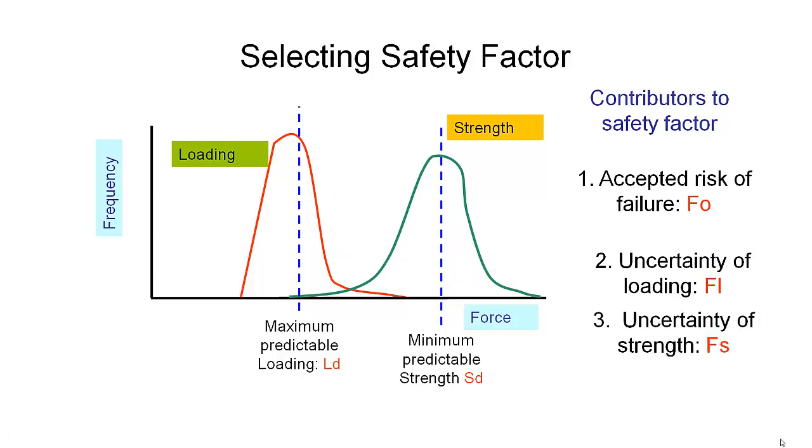Thirdly and finally the uncertainty of the strength of our final part. So that is how big is this tail here on the component strength that we're designing for? Is there a big variation here that we should expect or is there a smaller variation? And by combining the uncertainty of all these three different factors we can figure out what an appropriate safety factor is going to be for us.